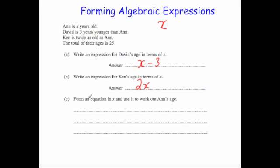And then it says form an equation in x and use it to work out Anne's age. Well let's read the rest of the question. So the rest of the question says the total of their ages is 25. So we need to add Anne's age x, David's age x minus 3, and Ken's age 2x, and that would equal 25 years old. So her age is x, the total remember means add them all up, plus David's age which is x minus 3, and add Ken's age which is 2x. And it says the total is 25, so we put that equal to 25.